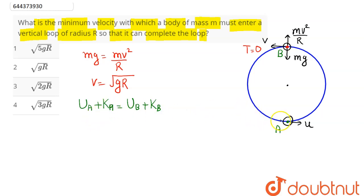Now here we can say potential energy at point A is zero. Kinetic energy at point A is half m u squared. Potential energy at point B is mg into, let's say, 2R since it is the diameter. And kinetic energy at point B is half m into v squared, where v we have calculated as root gR.